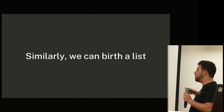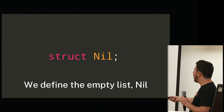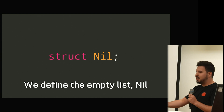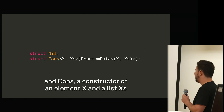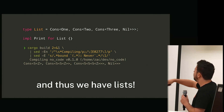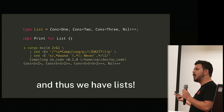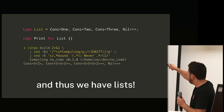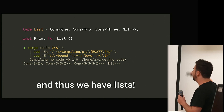Similarly to birthing integers, we need to birth lists. We can't use Vec, we need to do it ourselves. We define the empty list Nil — kind of like defining zero. And then we define a constructor Cons of an element X and a remaining list of X's — PhantomData, you can just sort of ignore it. And with this, we have lists. I have a type List as Cons of one, Cons of two, Cons of three, with Nil signifying the end — kind of like a null-terminated C string. Print it out and you get S(Z), S(S(Z)), S(S(S(Z))), end of list.